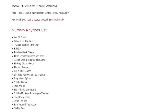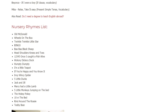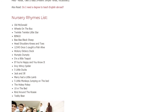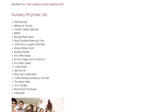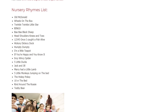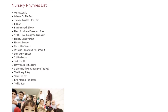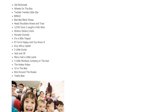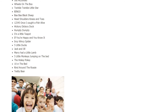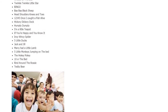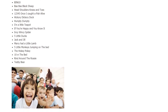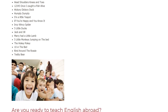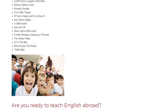Nursery rhymes list: Old MacDonald, Wheels on the Bus, Twinkle Twinkle Little Star, Bingo, Baa Baa Black Sheep, Head Shoulders Knees and Toes, 1-2-3-4-5 Once I Caught a Fish Alive, Hickory Dickory Dock, Humpty Dumpty, I'm a Little Teapot, If You're Happy and You Know It, Incy Wincy Spider, Five Little Ducks, Jack and Jill, Mary Had a Little Lamb, Five Little Monkeys Jumping on the Bed, The Hokey Pokey, Ten in the Bed, Ring Around the Rosie, Teddy Bear.